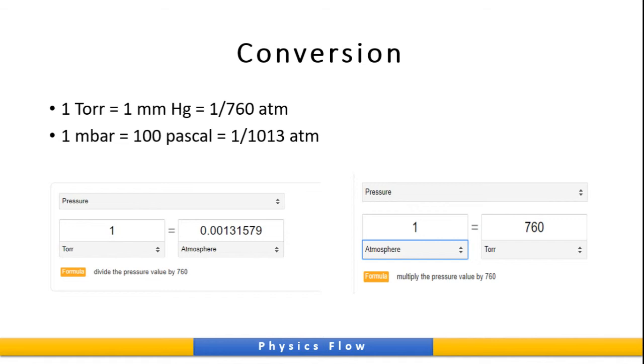Let's go to the conversion of torr and atmosphere. 1 torr equal to 0.00131579 atmosphere. What we did is we have divided the value of pressure by 760.